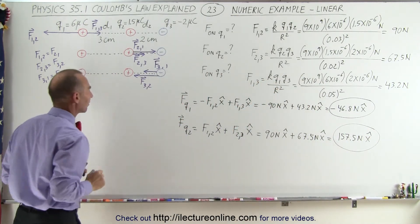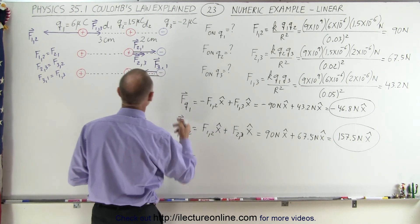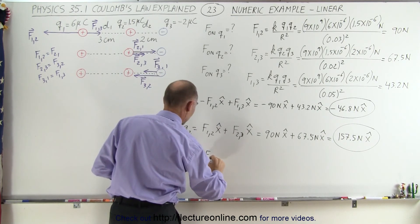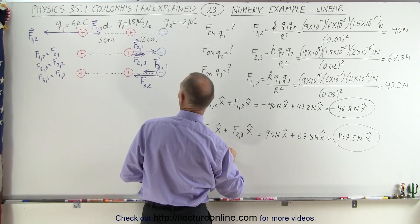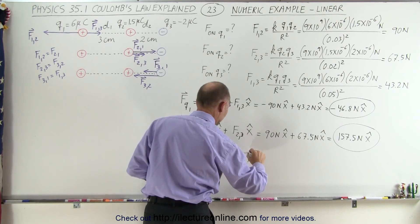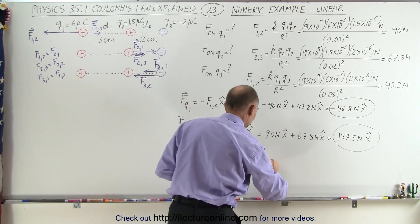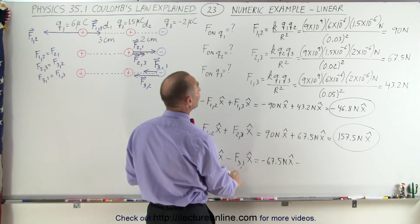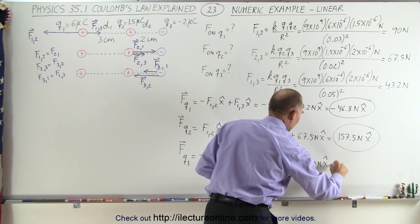The force on Q3: notice both forces are in the negative direction, so we have minus F32 in the x direction and minus F31 in the x direction. The magnitude of F32 is 67.5 newtons and F31 is 43.2 newtons, so we get minus 67.5 newtons minus 43.2 newtons in the x direction, which equals minus 110.7 newtons in the x direction.